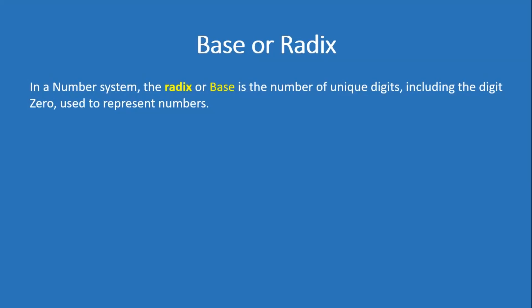From childhood, we are using numbers. That number is the decimal number. So in the decimal number system, we are using 10 unique digits: 0, 1, 2, 3, 4, 5, 6, 7, 8 and 9. So there are 10 unique digits.